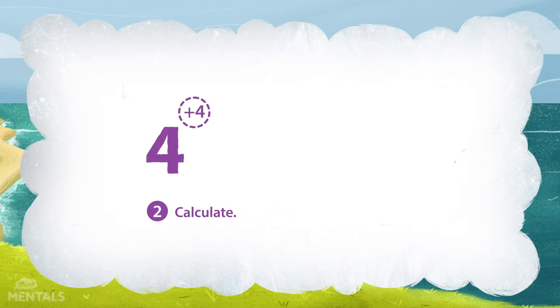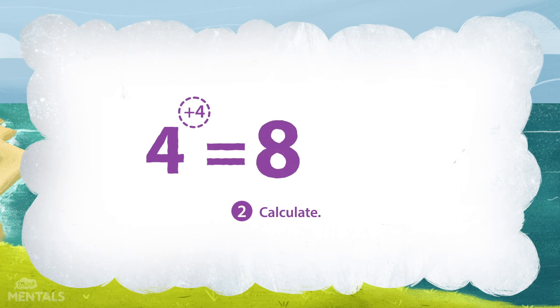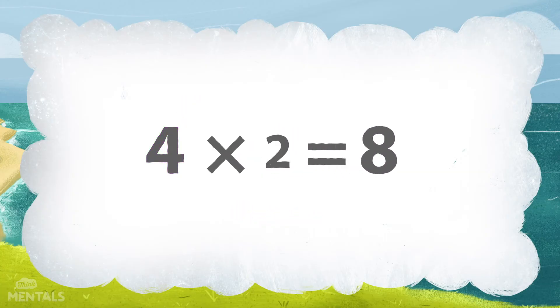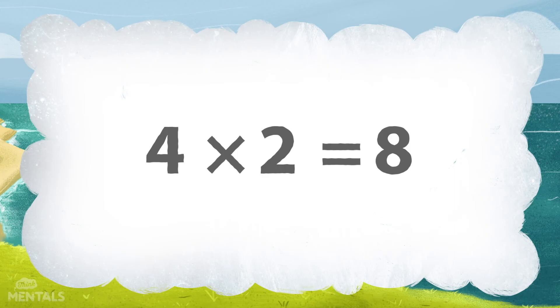Step two, calculate. Four plus four is a pretty simple calculation — it makes eight. So, four multiplied by two is eight.